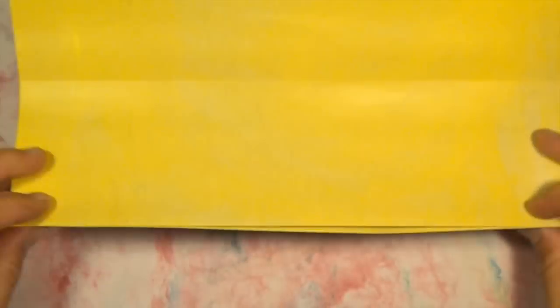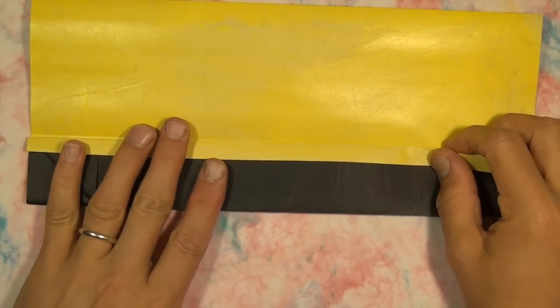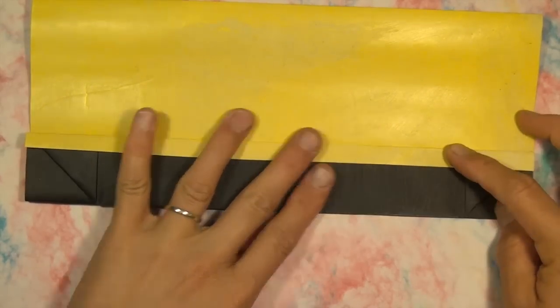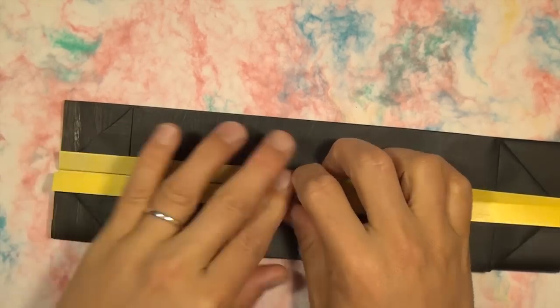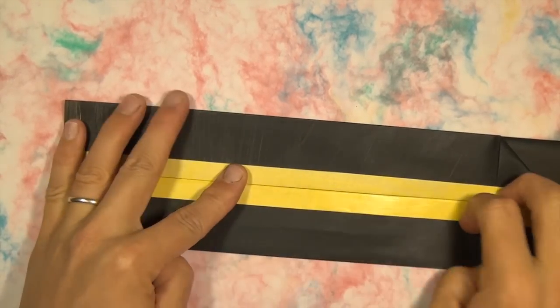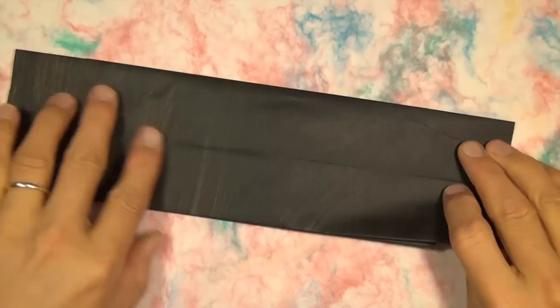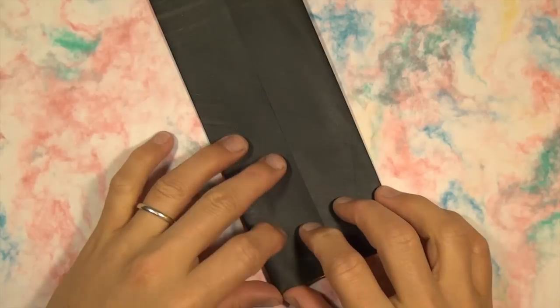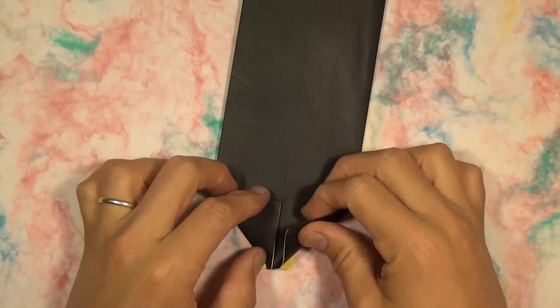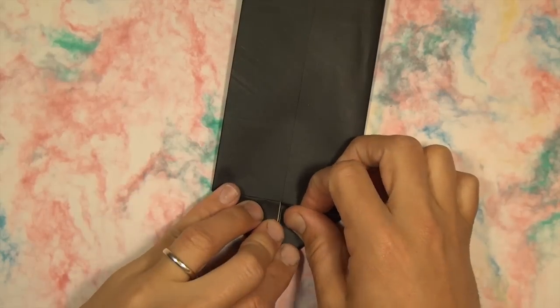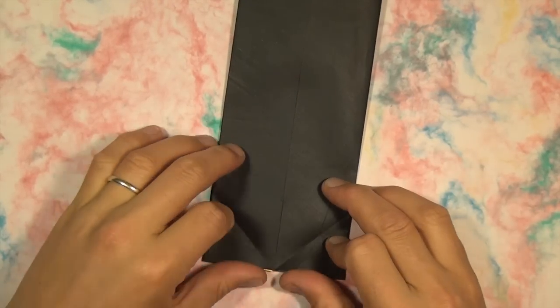All right, turn it over. And fold the edges to the middle. Okay, turn it over. And let's do a paper airplane fold. Fold. And unfold. And reverse. Right into here. And reverse.